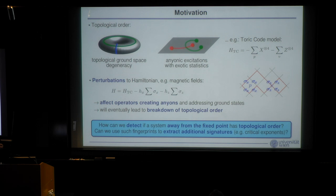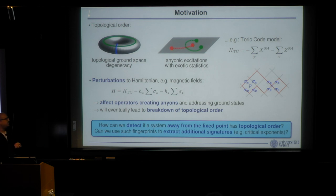The central question is: how can we detect if a system has topological order once we are not at the fixed point? Are there fingerprints — think of them as order parameters — that tell us something about topological order, and can we use them to extract additional information such as critical exponents and critical behavior?